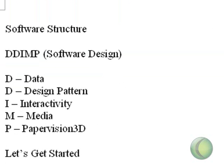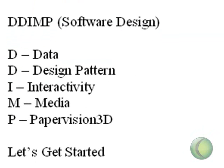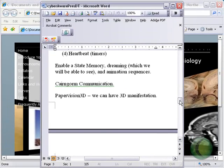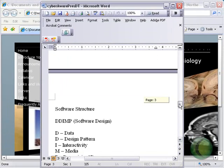Finally, the DIMP — that's the software design that we're using: D for data, D for design pattern, I for interactivity, M for media, and P for Paper Vision. So let's get started. Now let's give you a definition of the collective and its goals.